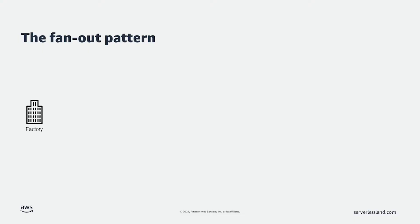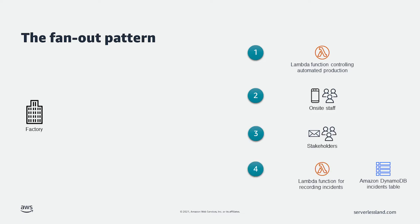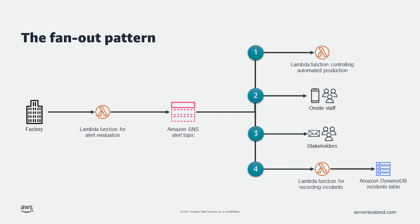First of all is the fan-out pattern. Let's say I have an event in my application that triggers multiple independent processes internally and externally. For example, I receive a system alert from an IoT sensor on my factory floor. I need to: one, stop the automated production line; two, notify on-site staff immediately; three, notify stakeholders; and four, save a record of the report.